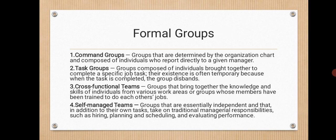Formal groups can be divided into certain types. First is a command group: groups determined by the organization chart and composed of individuals who report directly to a given manager. Task group: groups composed of individuals brought together to complete a specific job task. Cross-functional teams: groups that bring together the knowledge and skills of individuals from various work areas, or whose members have been trained to do each other's jobs. Self-managed teams: groups that are essentially independent and, in addition to their own tasks, take on traditional managerial responsibilities such as hiring, planning, scheduling, and evaluating performance.